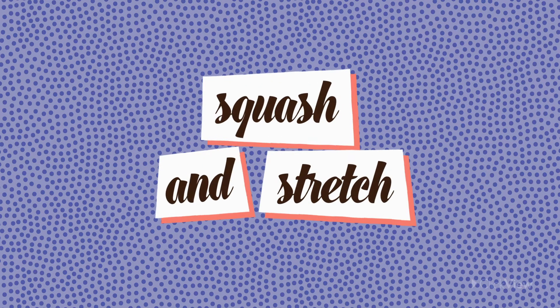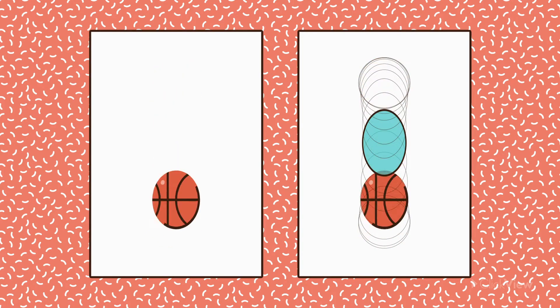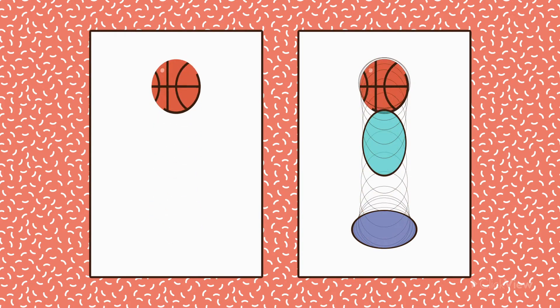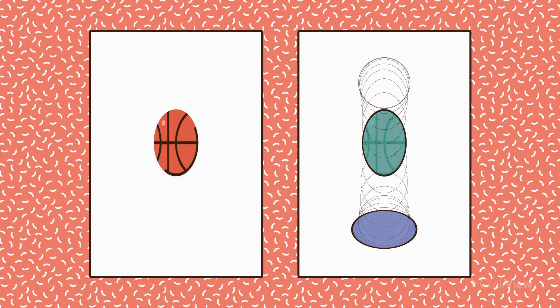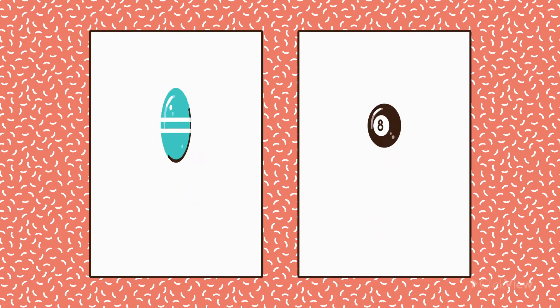Squash and Stretch. This principle refers to the way we can animate objects to get longer or flatter in order to give them a sense of weight, speed and mass. The more an object is squashed and stretched, the softer it looks.